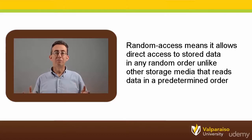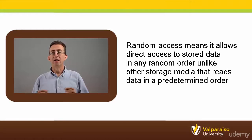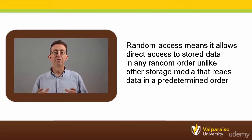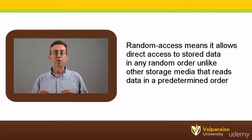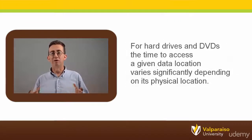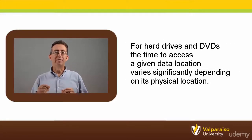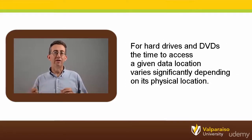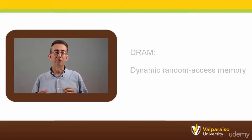If power is lost or removed from a microcontroller, all of its SRAM contents will be lost. SRAM is known as a random access memory because it allows the stored data to be accessed directly in any random order. In contrast, other storage media such as hard disks, CDs, DVDs, and magnetic tape drives read and write data only in a predetermined consecutive order due to mechanical design limitations, so the time to access a given data location on a magnetic drive will vary significantly depending on its physical location.